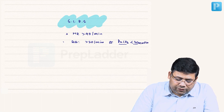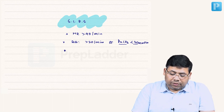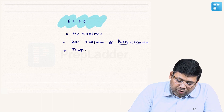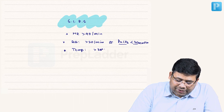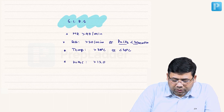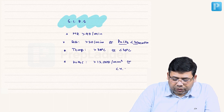We have seen respiratory rate and heart rate. One more parameter is temperature — temperature of the patient more than 38 degrees centigrade or less than 36 degrees centigrade. Then, WBC count more than 12,000 per mm³ or less than 4,000 per mm³.